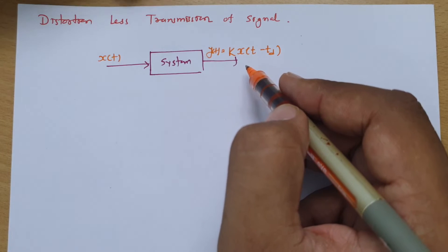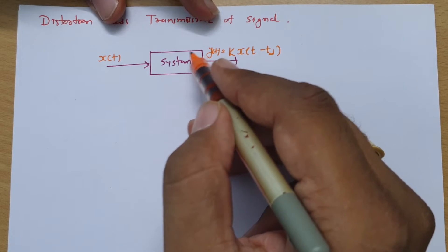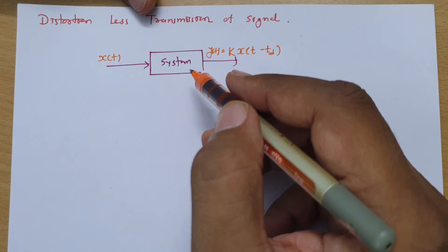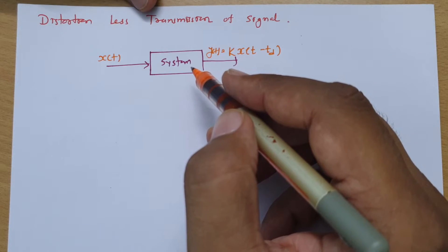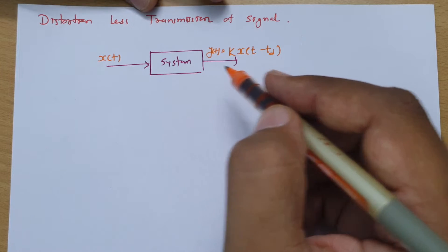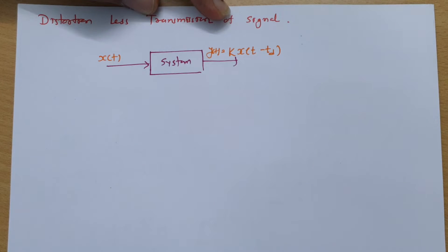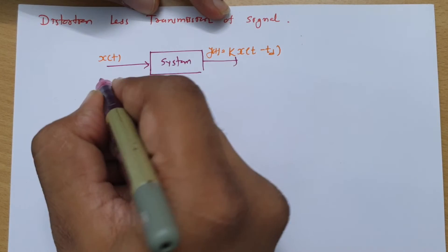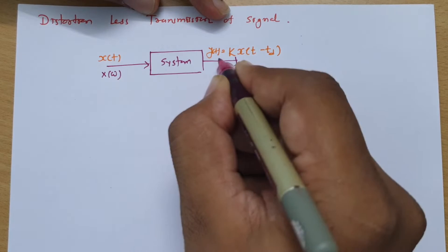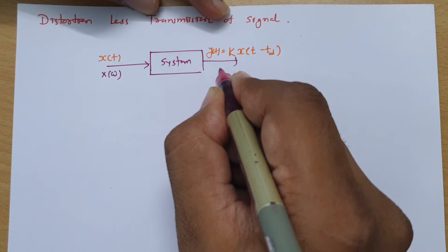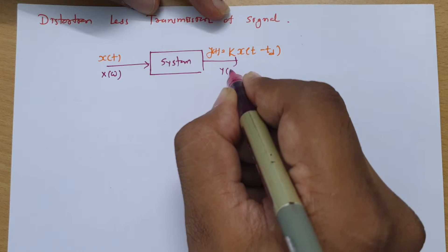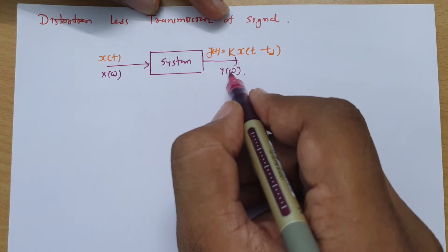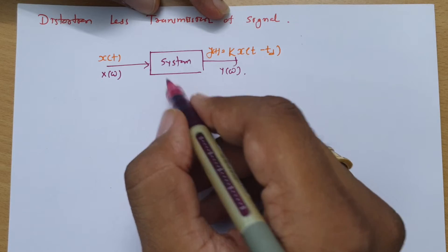Now I will derive the transfer function of this system so we can understand its frequency response, and based on that, determine whether the transmission is distortion-less. If x(t) has Fourier transform X(ω) and output y(t) has Fourier transform Y(ω), then relating input and output transforms gives the transfer function of the system.